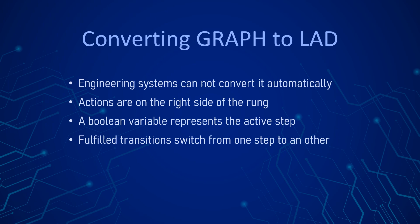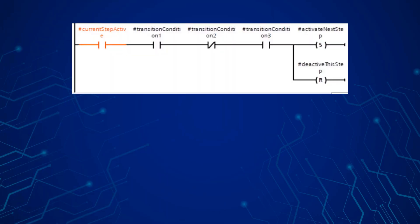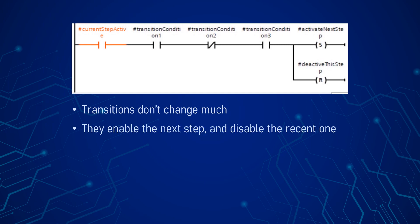Before we solve the mentioned task in TIA portal, here is some visual representation. The contactor highlighted with orange represents our step active. The remaining contactors are the sensor values to be taken into account when evaluating the transition. If the condition is true, then activate the next step's boolean variable and reset the current step's variable.